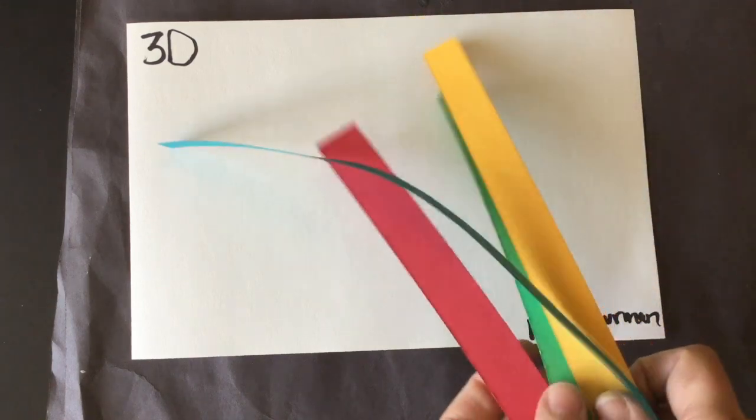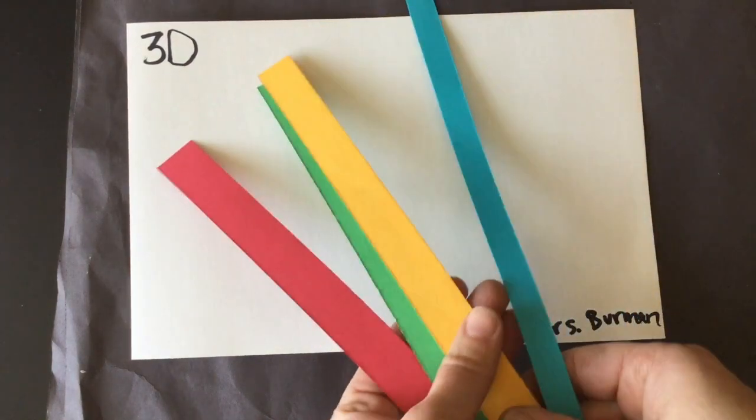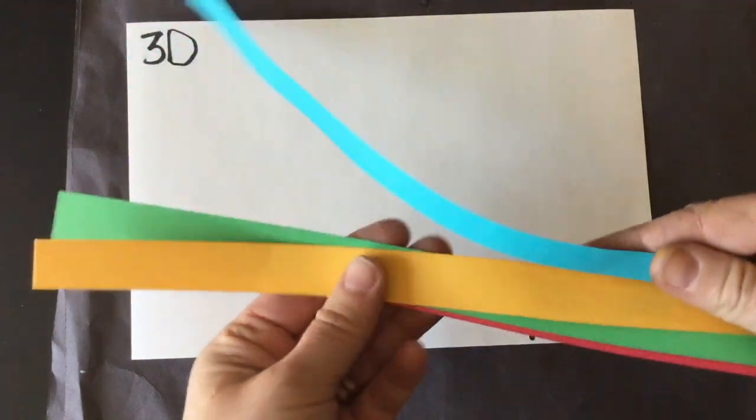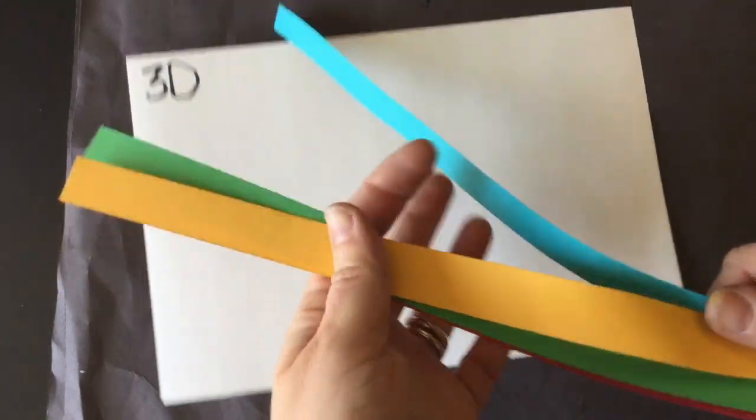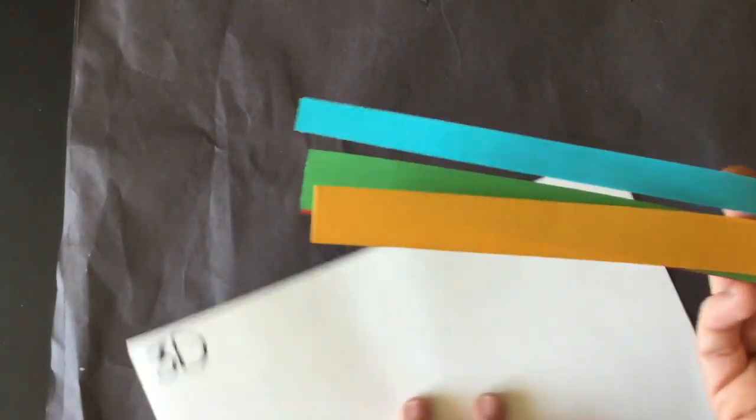So you're gonna first pick four colors of paper that you want to use. Four strips. We're using the same strips that we used last time, but this week we're going to make it three-dimensional.